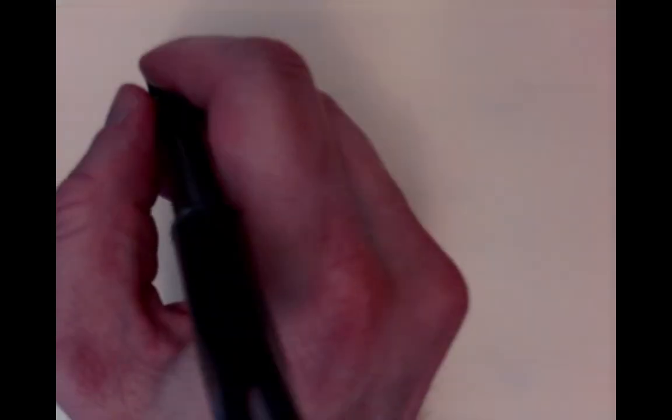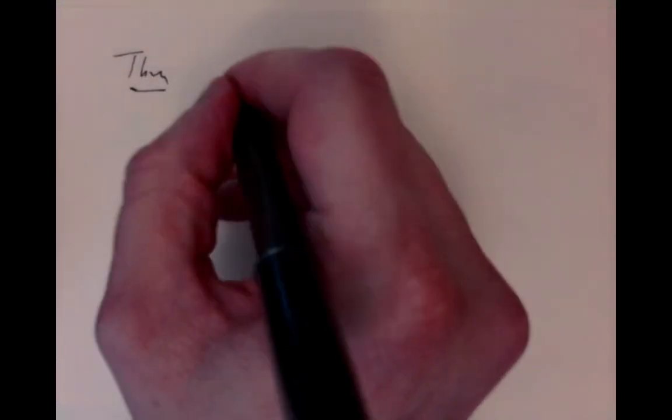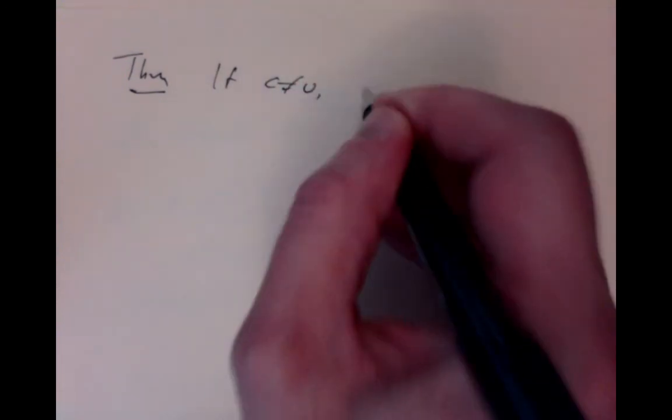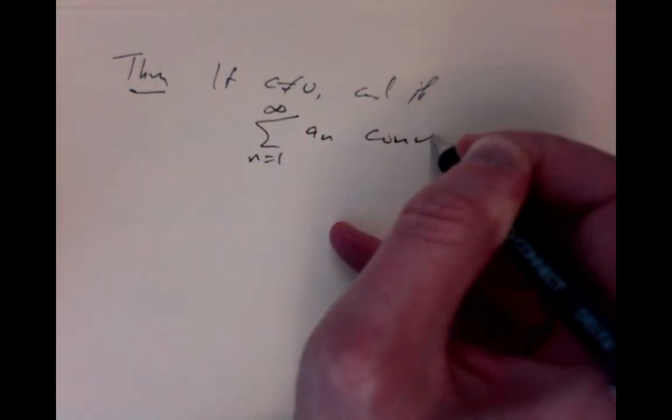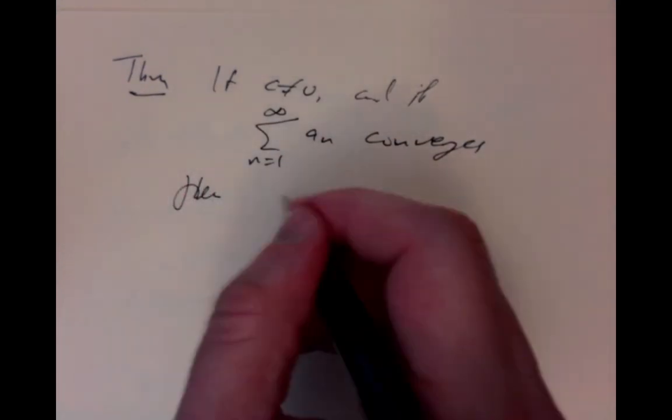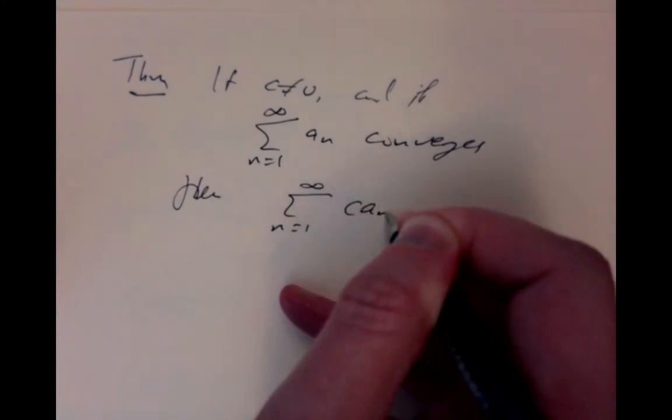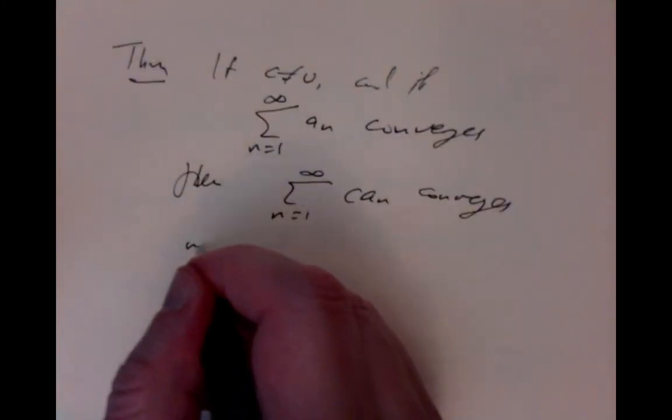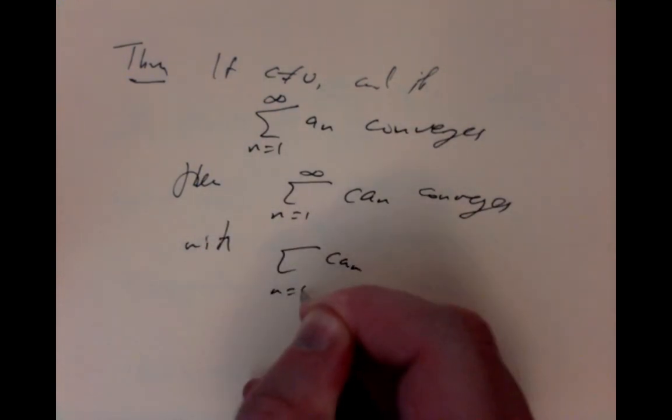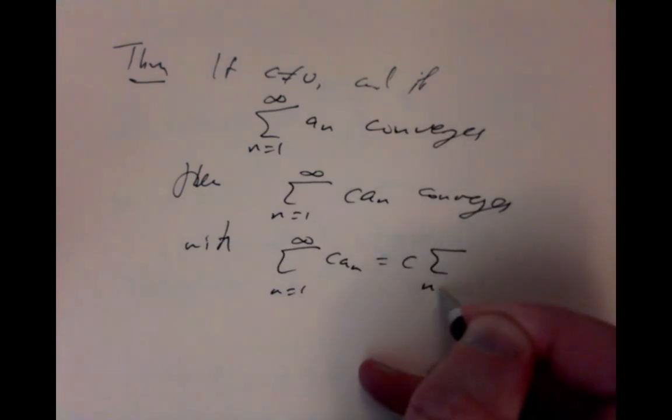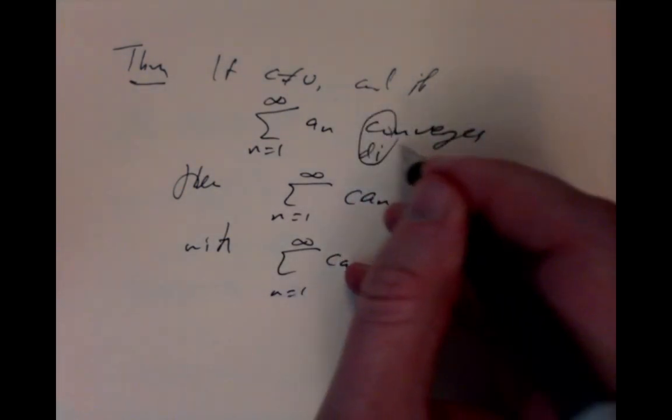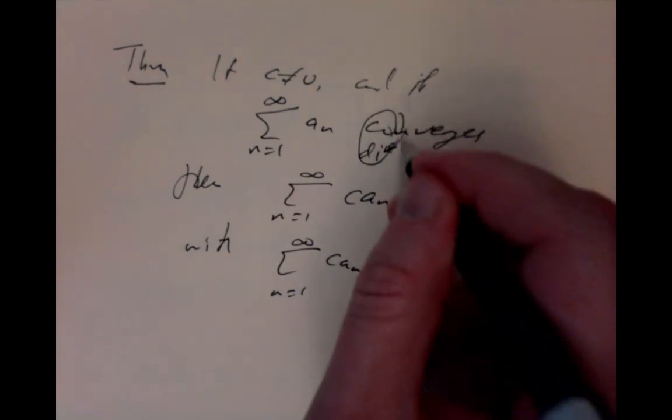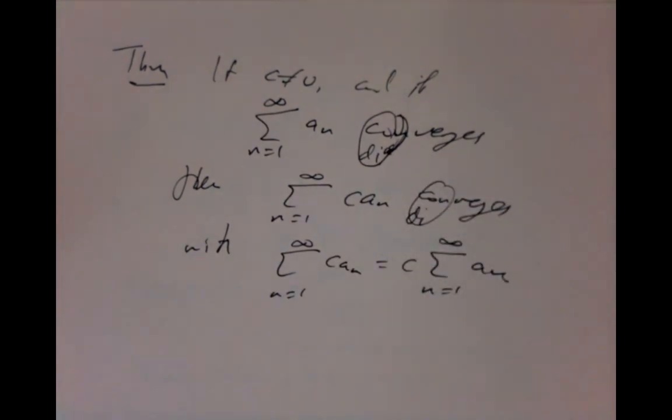Once you have proven something to be convergent, lots of other things are automatically forced to be convergent. So it's an easy thing to prove that if you have a non-zero constant, and if an infinite sum converges, then all multiples of it converge. You just add up the multiples, and they add up to the multiple. With the sum of the multiples being the multiple of the sum. And also, it works for diverges instead of converges.